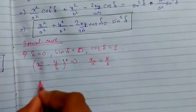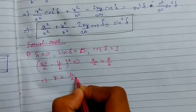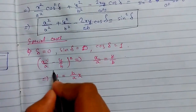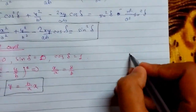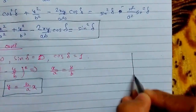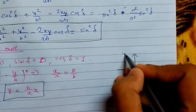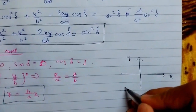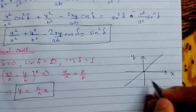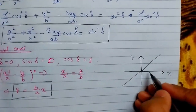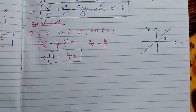We can express this as y equals (b/a)x. The graph is a straight line passing through the origin making some angle θ with the x-axis.